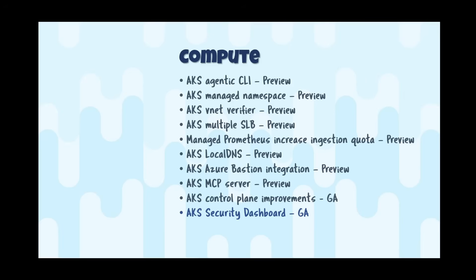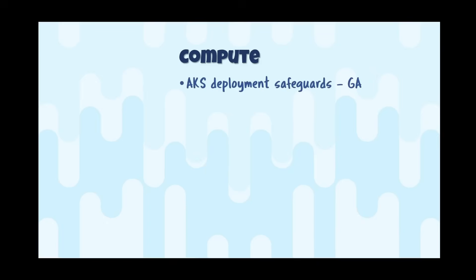The AKS security dashboard is GA — a central view for security posture and runtime threat protection for your AKS clusters. You can enable Defender for Containers and see recommendations for misconfigurations, which you can assign to people. The AKS static public prefix egress gateway has also gone GA, letting annotated pods route outbound traffic through a static public IP prefix, useful when talking to internet resources that allowlist only certain source IPs.